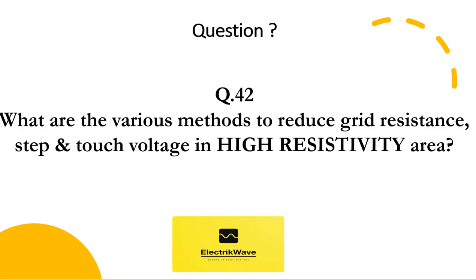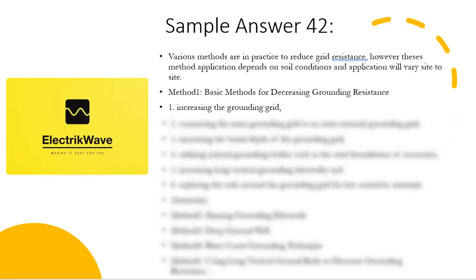Question number 42: what are the various methods to reduce grid resistance, step and touch voltage in high resistivity areas? Sample answer 42: various methods are in practice to reduce grid resistance; however, their application depends on soil conditions and will vary site to site. Method 1 — basic methods for decreasing grounding resistance: increasing the grounding grid. The ebook link is given in the description box — download it and get ready for the interview.